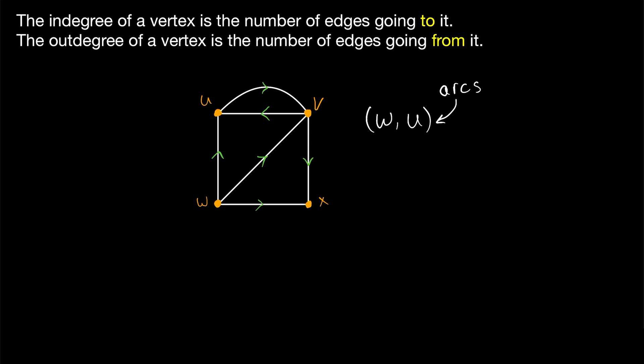And since there are two different types of arcs that a vertex might be incident with, an arc leaving it, or an arc going to it, we have to define these two different types of degrees in directed graphs. The in-degree of a vertex is the number of edges going to it, or the number of edges going into it. Whereas the out-degree of a vertex is the number of edges going from it, or going out of it.